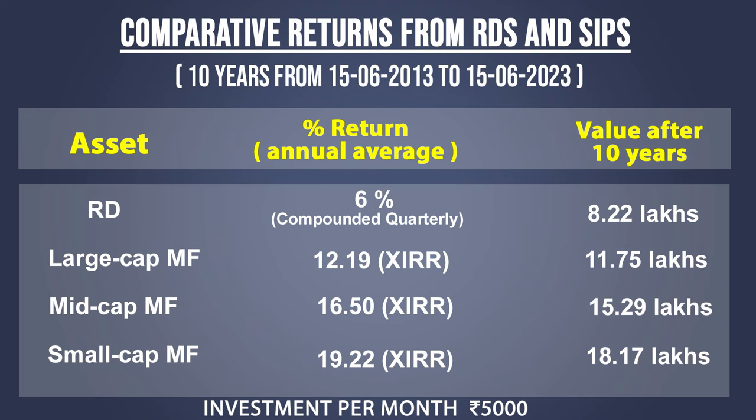The conclusion is very clear. Let me add one more point here: in mutual fund returns, we always take XIRR — Extended Internal Rate of Return — not the CAGR, because in SIPs each installment is made separately, so the returns from each installment have to be treated separately. That is why Extended Internal Rate of Return is used. And if you look at this XIRR, there is a huge difference between the returns from RDs and the returns from equity mutual funds.